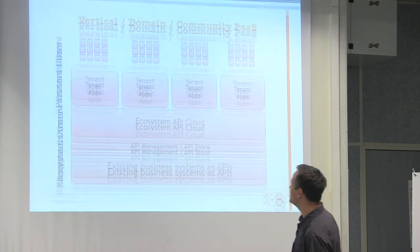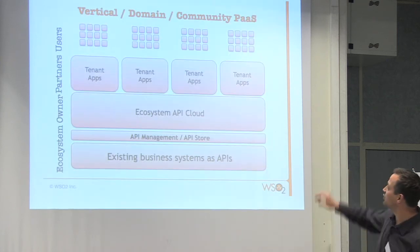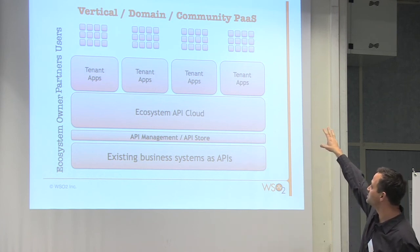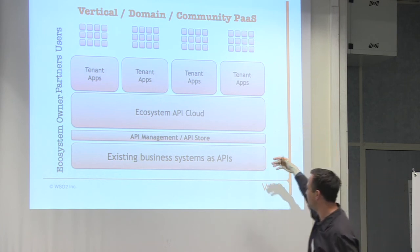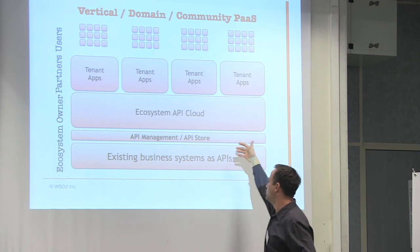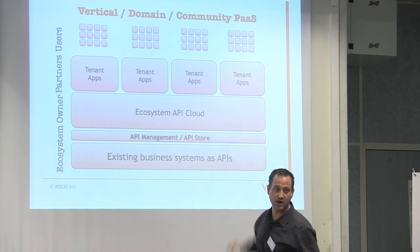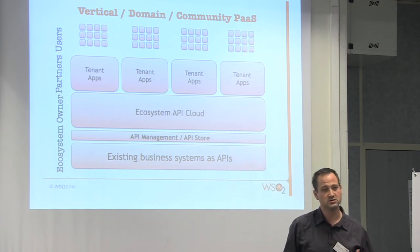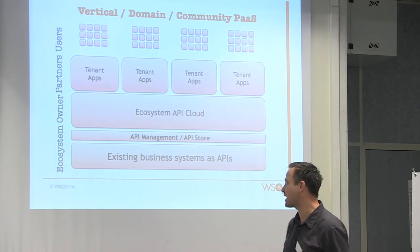This is what I'd call an ecosystem or vertical domain community: you have your APIs, but then you have an API cloud in which people can build further APIs and interact.